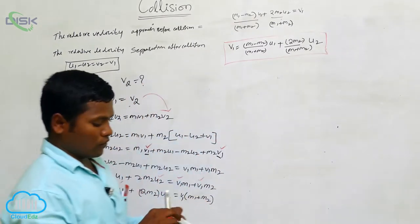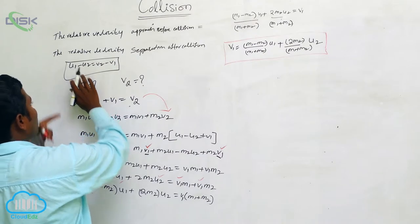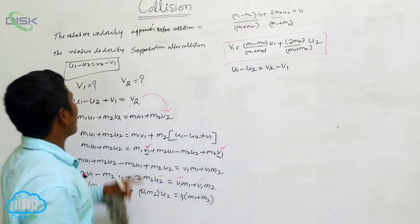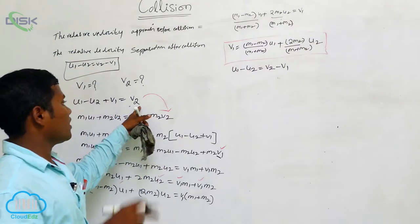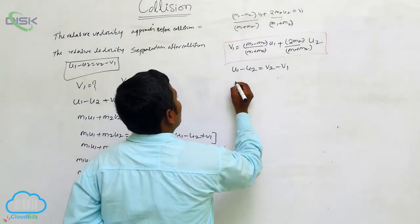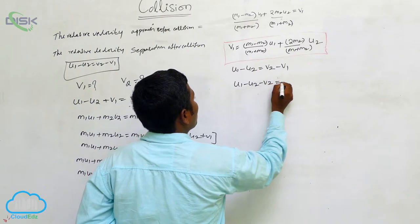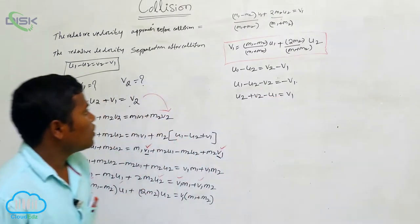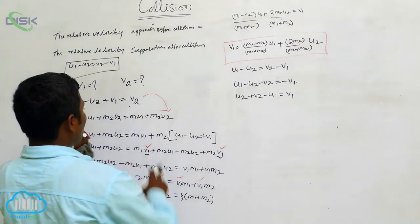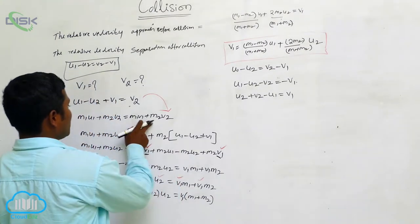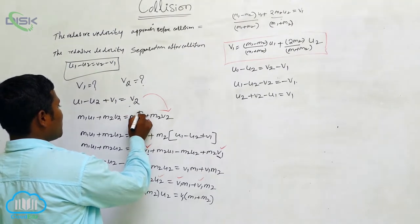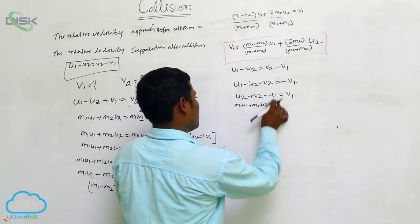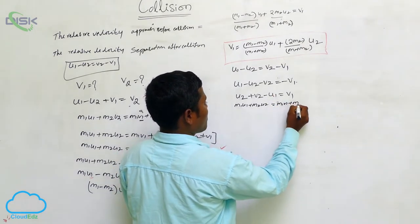Now we are going to find the V2 value. How can we find it? Same way, from these equations. We use U1 minus U2 equals V2 minus V1. Previously I substituted V2; now I have to take the V1 value. So V1 equals U2 plus V2 minus U1. Substituting this V1 into the momentum conservation equation: M1 U1 plus M2 U2 equals M1 V1 plus M2 V2.